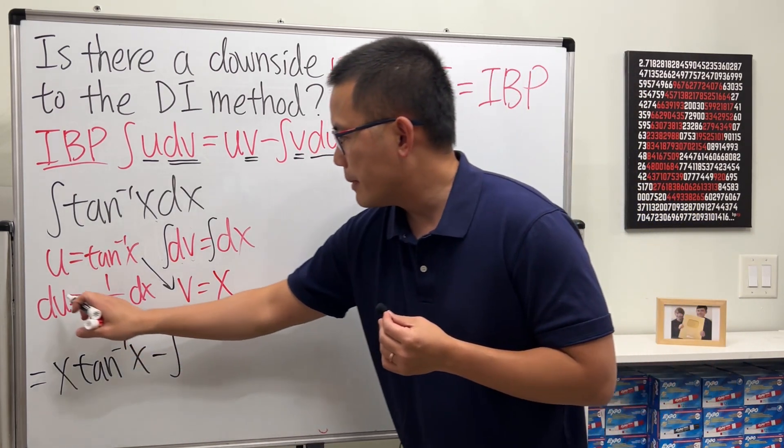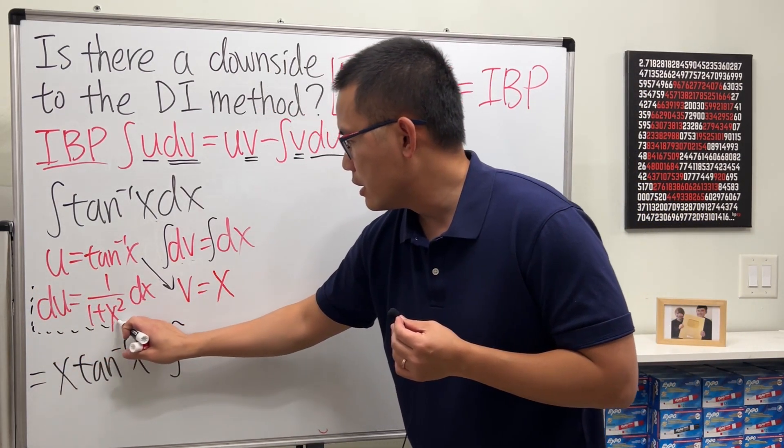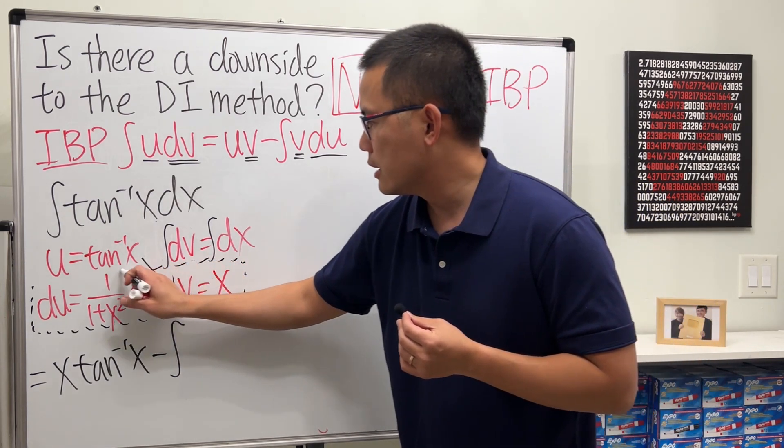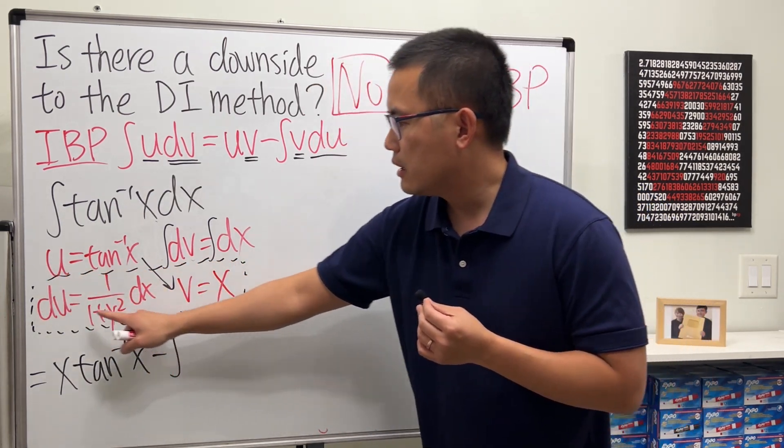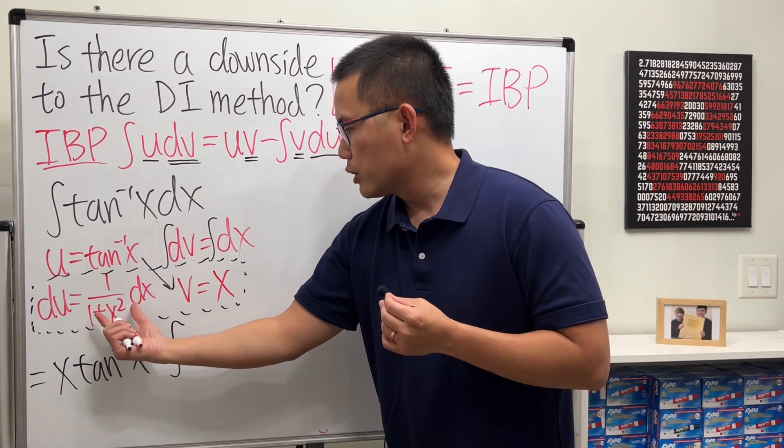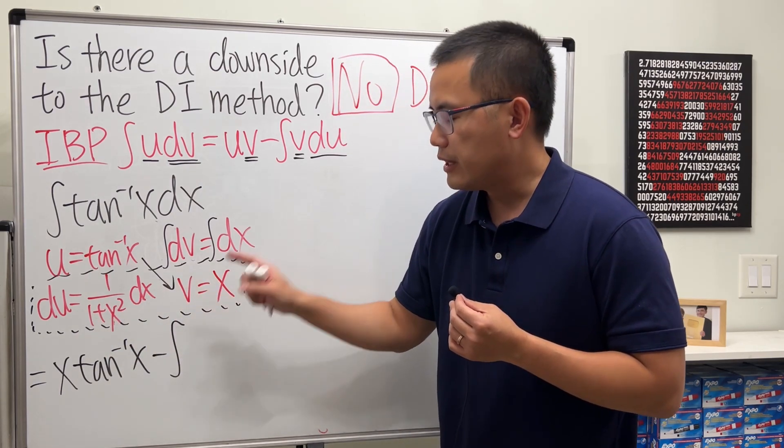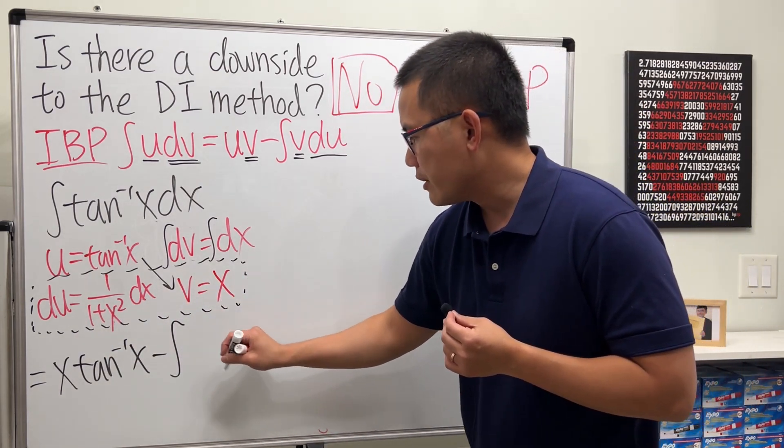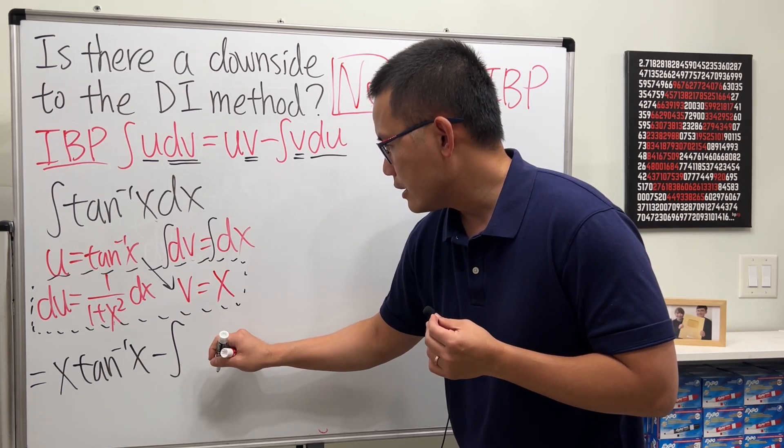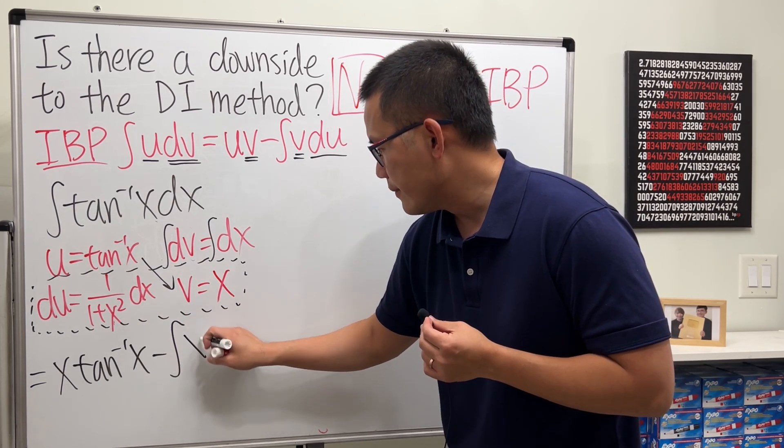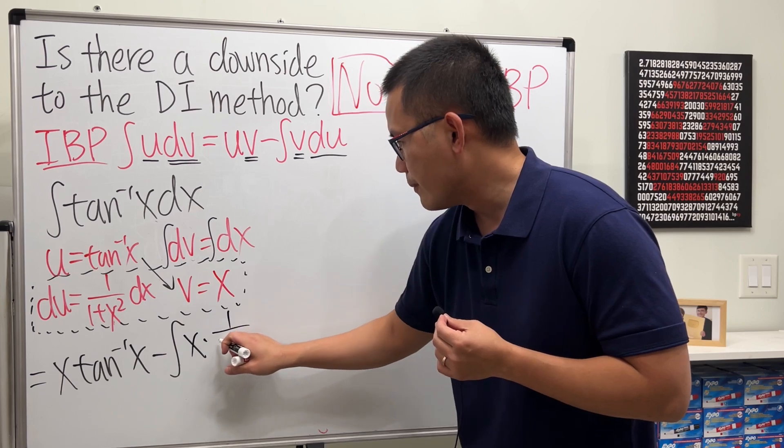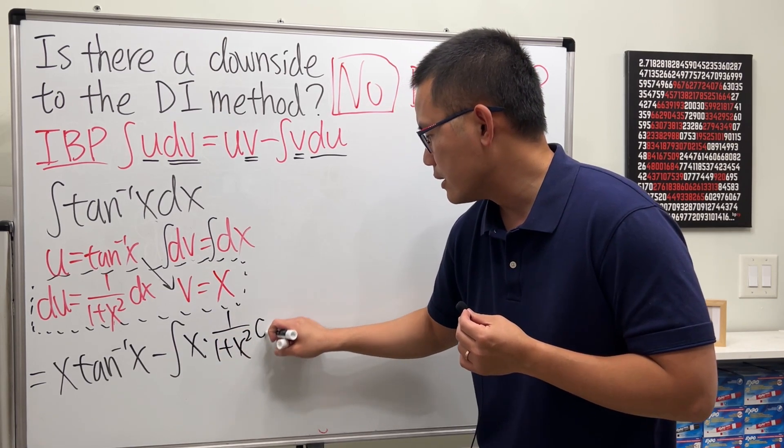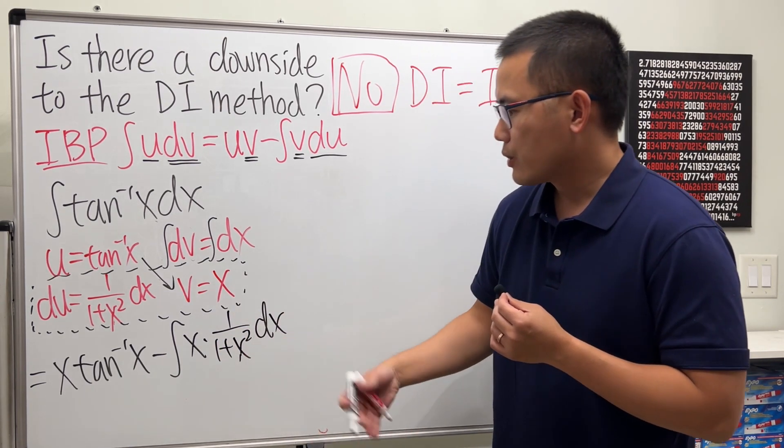And then the second part says we will have to subtract the integral of VDU. And VDU happens to be right here. We have VDU. So we are just going to be multiplying these two things together and put that inside of the integral. So we have the X right here. And let me actually just read it like this. X times 1 over 1 plus X squared DX.